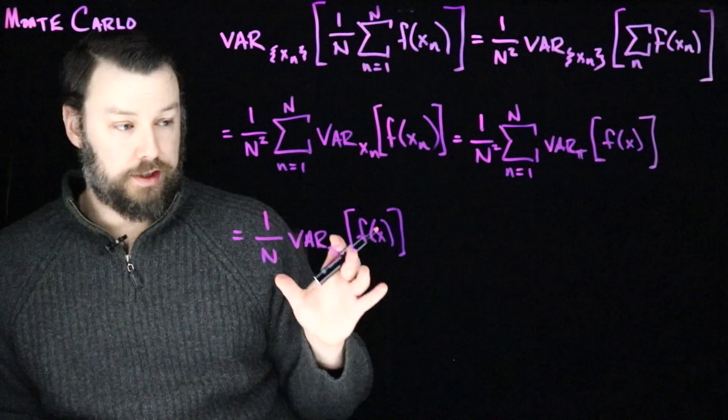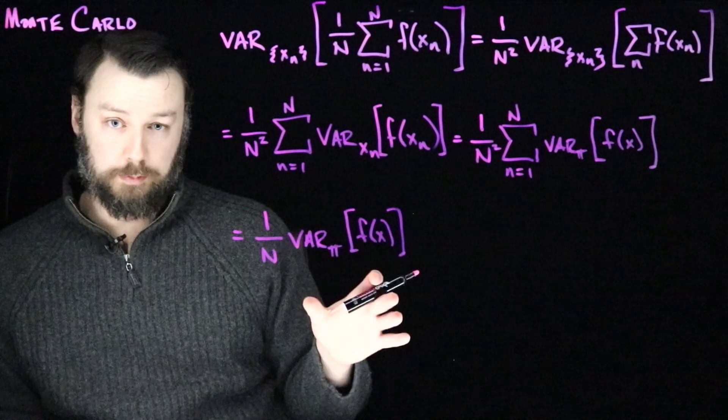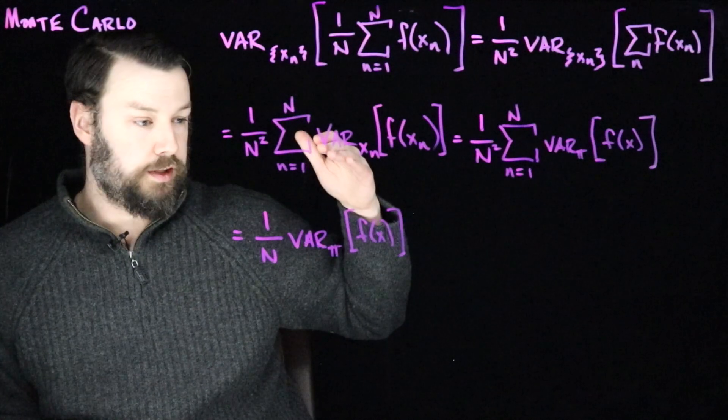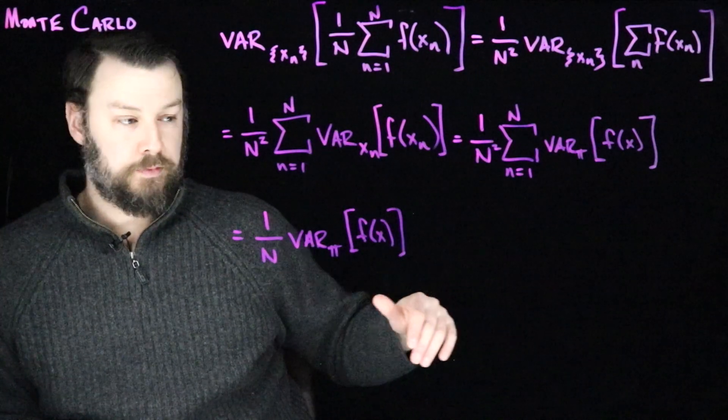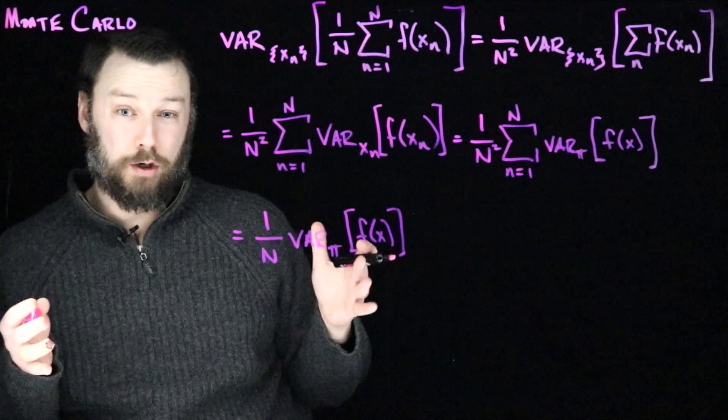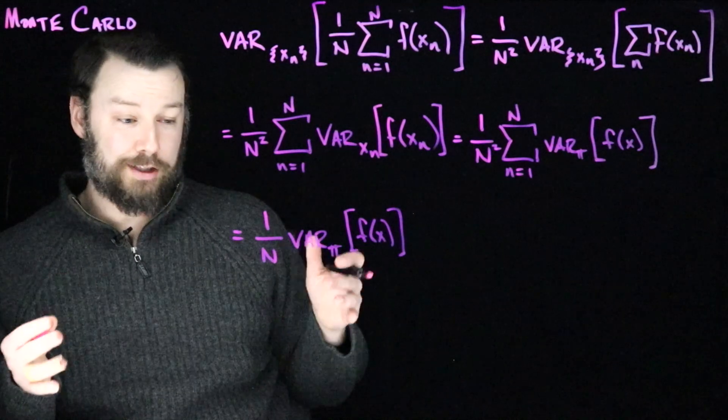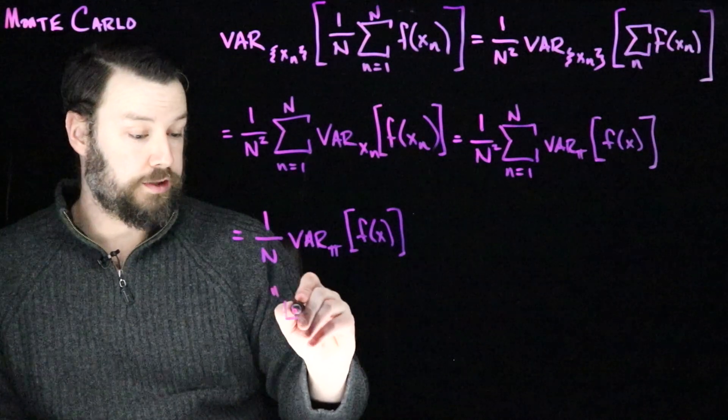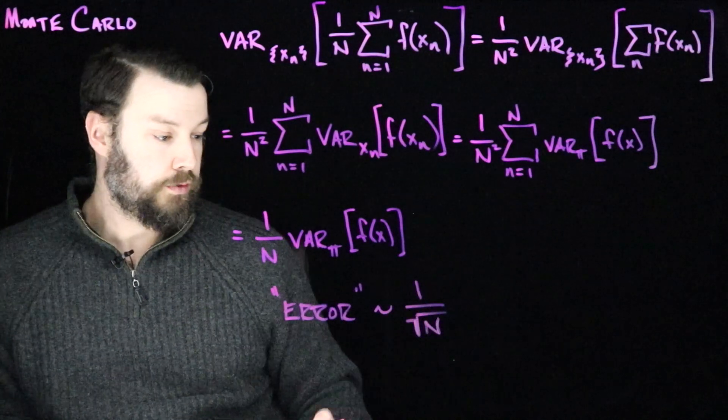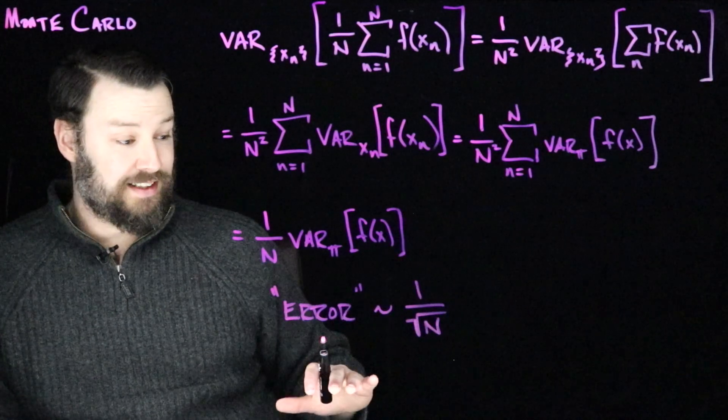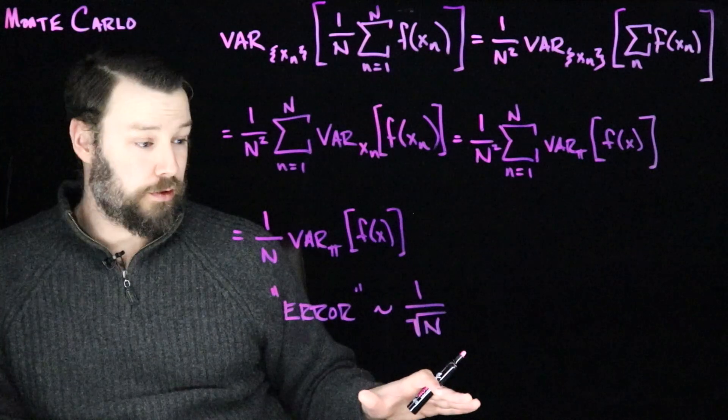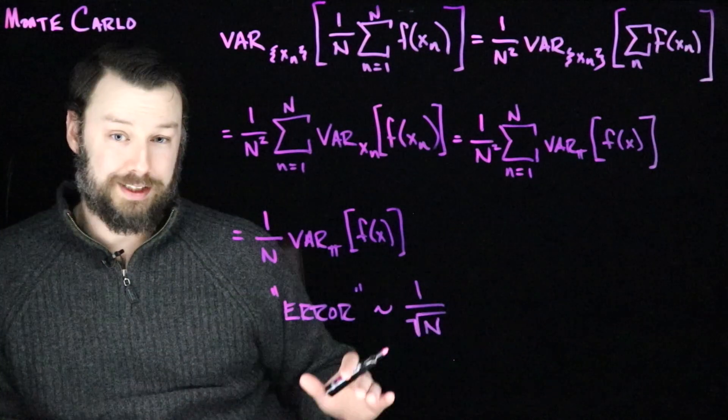So the takeaway here is that the variance of a Monte Carlo estimator goes as 1 over n, where n is the number of samples. As I increase the number of samples, the variance is going down linearly. That sounds like good news, and in some ways it is, but variance is kind of the square of our error in a sense. It's not the actual error itself. So this means the kind of error of our Monte Carlo estimate is going as 1 over root n, which is a little bit of bad news because that means as I invest more samples, my error is going down, but I'm getting diminishing returns. This means that it costs more and more in order to get a better answer.